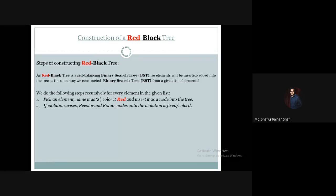First, pick an element, name it Z, color it red, and insert it as a node into the tree. When we insert the node, a violation may arise. So when the violation arises, we will do proper recoloring or rotation.